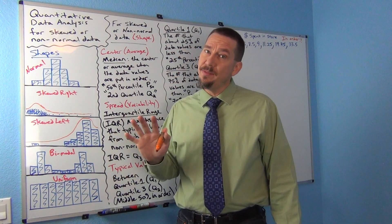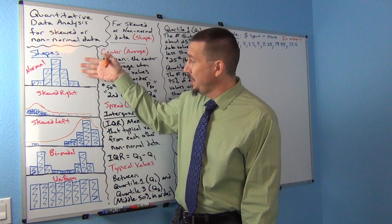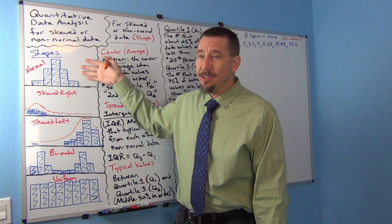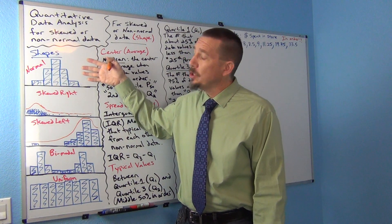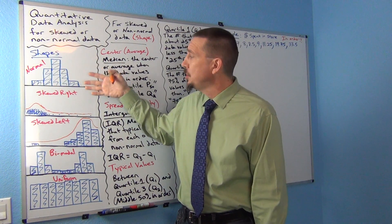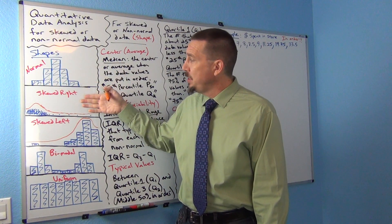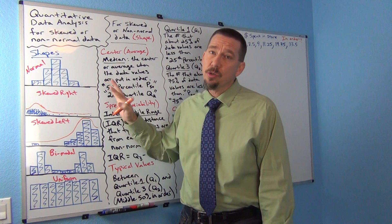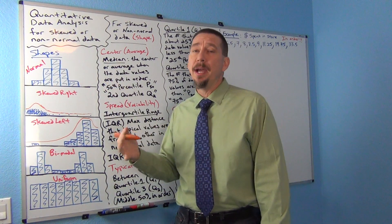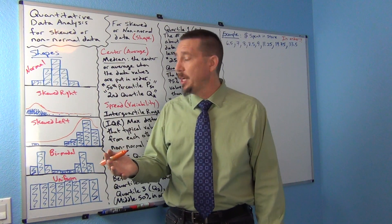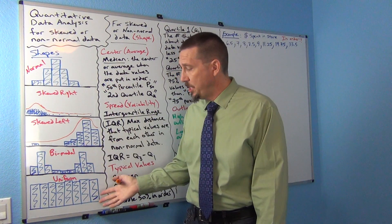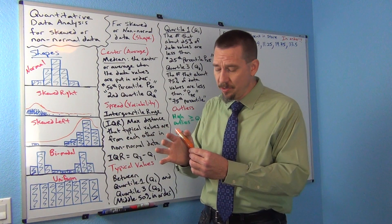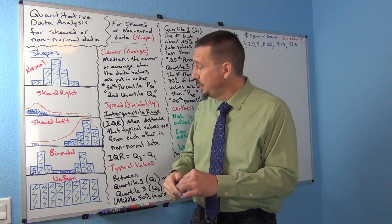Most quantitative data sets are usually going to be one of these three: normal or close to normal, skewed right, or skewed left. But every once in a while you might run into a couple of other shapes that are very unusual — you really don't see them that often.